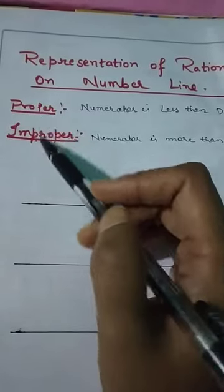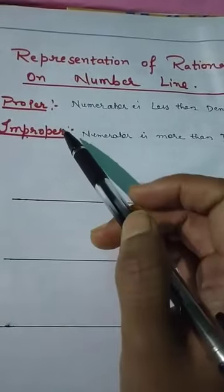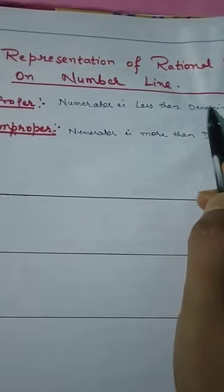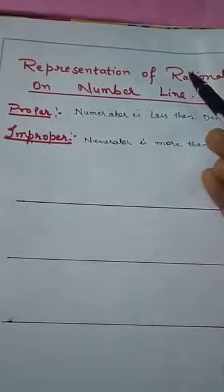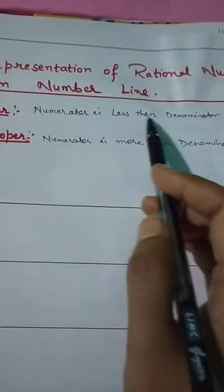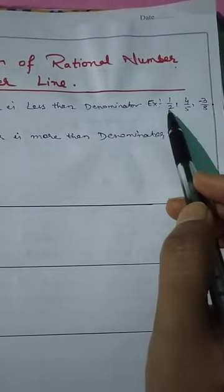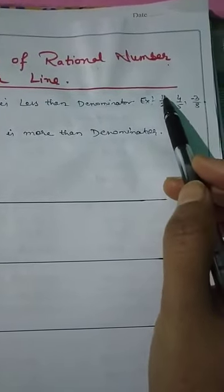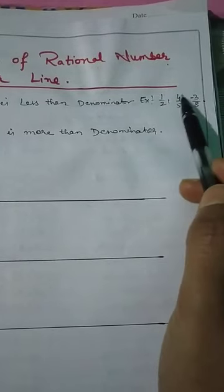Improper and proper fractions: as I taught you in the fractions chapter, whenever the numerator is less than the denominator it is called a proper fraction, and whenever the numerator is more than the denominator it is called improper. Similarly, we have proper rational numbers and improper rational numbers. Whenever the numerator is less than the denominator it is called a proper rational number — like 1/2, 4/5, or -3/8.